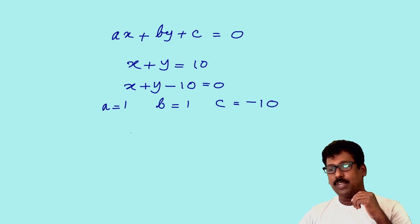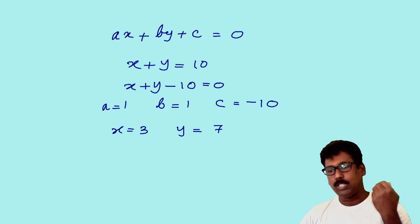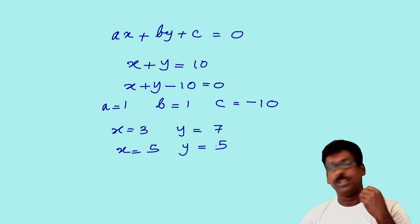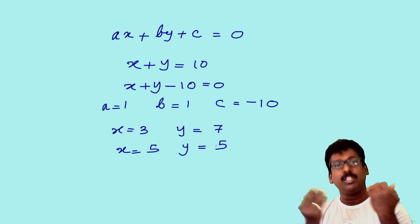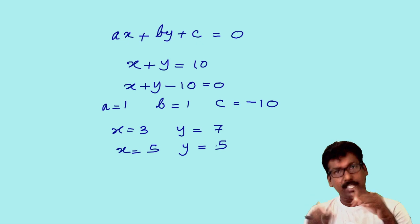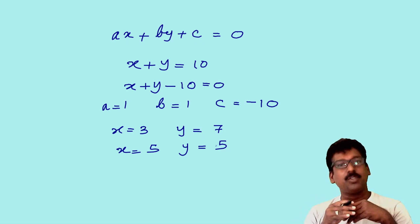What are the values of x and y in x plus y equals 10? If x equals 3, y will be 7, because 3 plus 7 equals 10. If x equals 5, y is also 5, because 5 plus 5 equals 10. So x equals 3, y equals 7 is one solution, and x equals 5, y equals 5 is another solution. Let me draw the graph of x plus y equals 10.